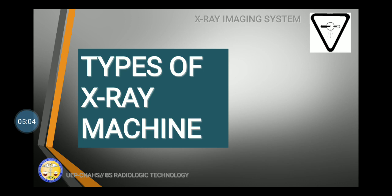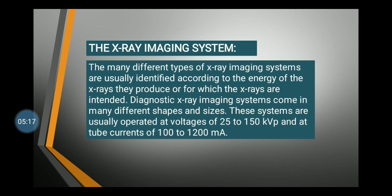For this morning we will discuss the different types of X-ray machines. There is not just one typical X-ray machine we can use as radiologic technologists — in fact we can use a wide variety. These machines are identified according to their energy and the application of the X-rays they produce. Diagnostic imaging systems come in many shapes and sizes, operating at voltages of 25 to 150 kVp and tube currents of 100 to 1200 mA.